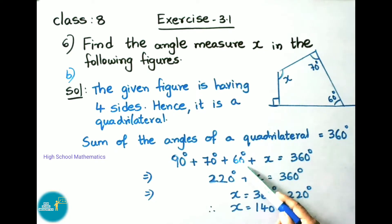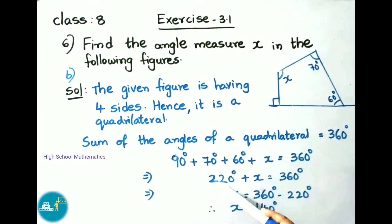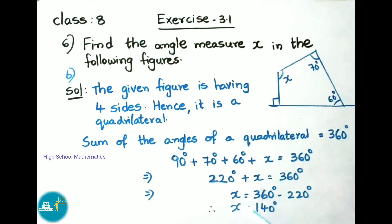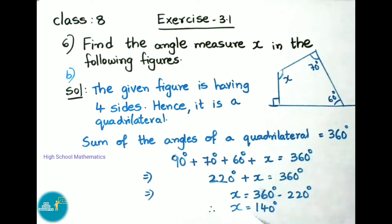So 90 + 70 + 60 + x = 360 degrees. That gives 220 + x = 360 degrees. Transposing, x = 360 - 220 = 140 degrees. Therefore x = 140 degrees.